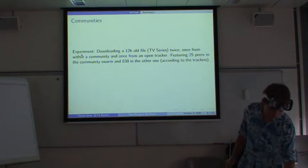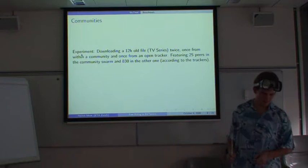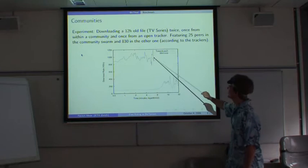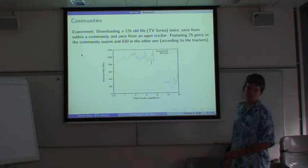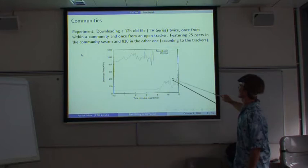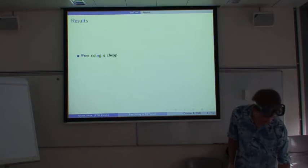We did an experiment to clarify on this, where we downloaded a TV series which was about 12 hours old from within the community and from MiniNoah, a popular open tracker site. And as you can see here, the download speed in the closed community was way, way faster than in the open wild internet. So these times here, minutes, they are logarithmic. So we finished after about 8 minutes. And in the open wild, we needed 32 minutes to finish the download. So that's quite impressive.